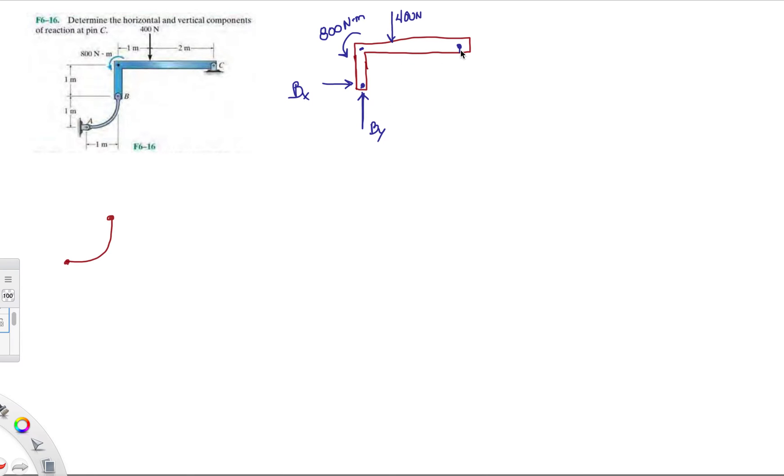And then we have CY, and then let's draw the X in this direction, CX, just so BX and CX can counteract each other.